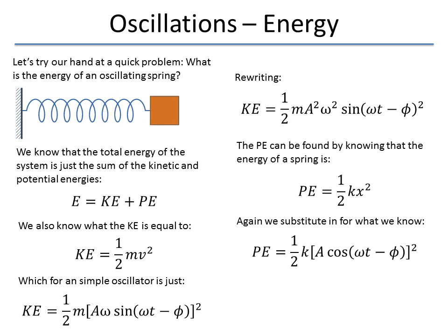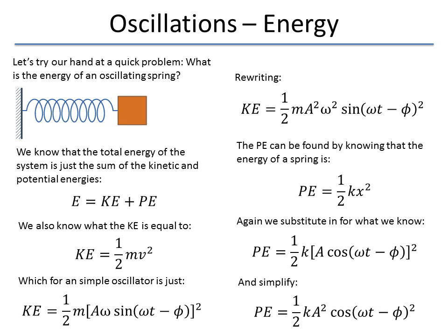So again, we substitute it. So we're just going to substitute in what our value is. So we have one half A cosine of omega t. Again, we're going to simplify it. Potential energy is one half k A squared cosine of omega t minus phi quantity squared.